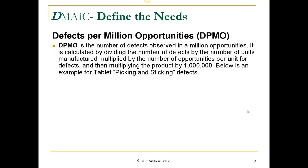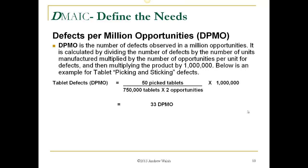Defects per million opportunities (DPMO) is the number of defects observed in a million opportunities. It's calculated by dividing the number of defects by the number of units manufactured, multiplied by the number of opportunities per unit for each defect, then multiplying the result by one million. For example, with tablet picking and sticking defects: 750,000 tablets manufactured, two opportunities (picking and sticking), and 50 picked tablets. So that's 50 divided by 750,000 times 2, times 1,000,000, which equals 33 defects per million opportunities.